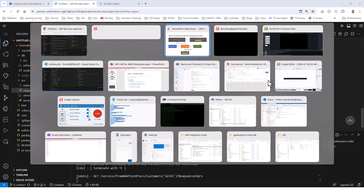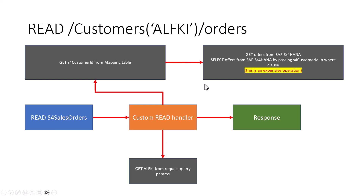The last thing is, if I'm going to use OData V4 in my application — which is what I'll be doing — the request is slash customers, then the primary key, then slash orders. In this case, the read I want to target is the S4 sales orders. I just get this primary key from the query itself, without making any call to the remote Northwind database. Then from that, I can go to the mapping table and get the corresponding S4 customer ID.